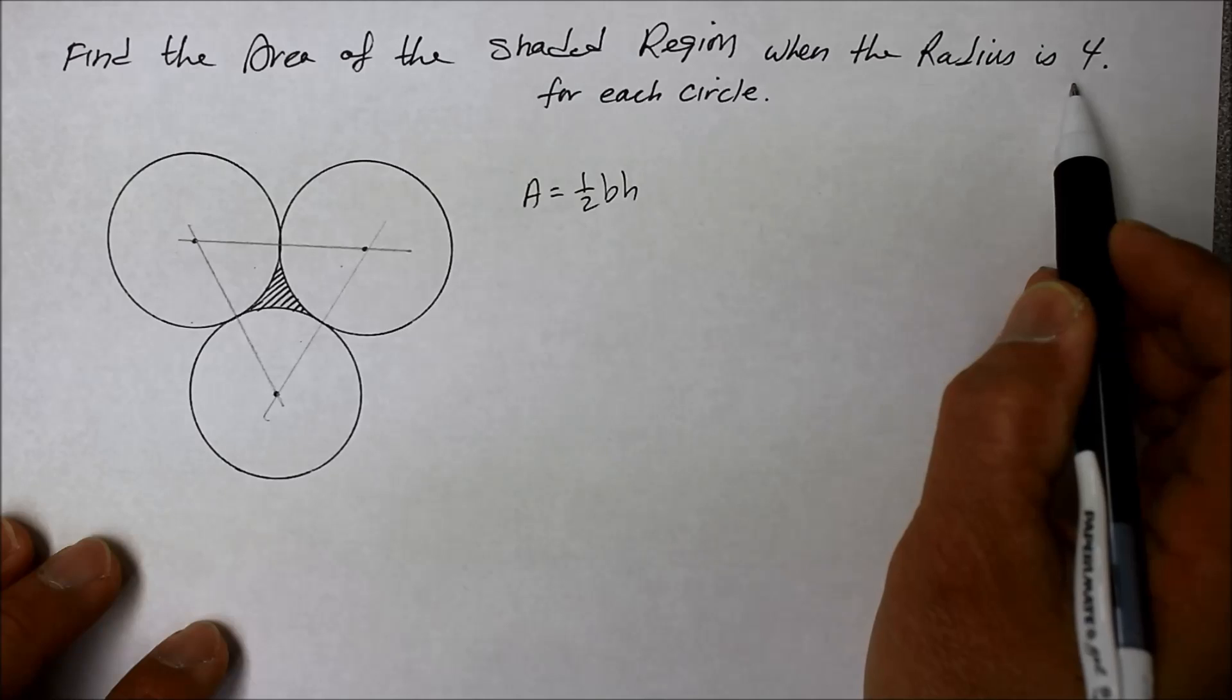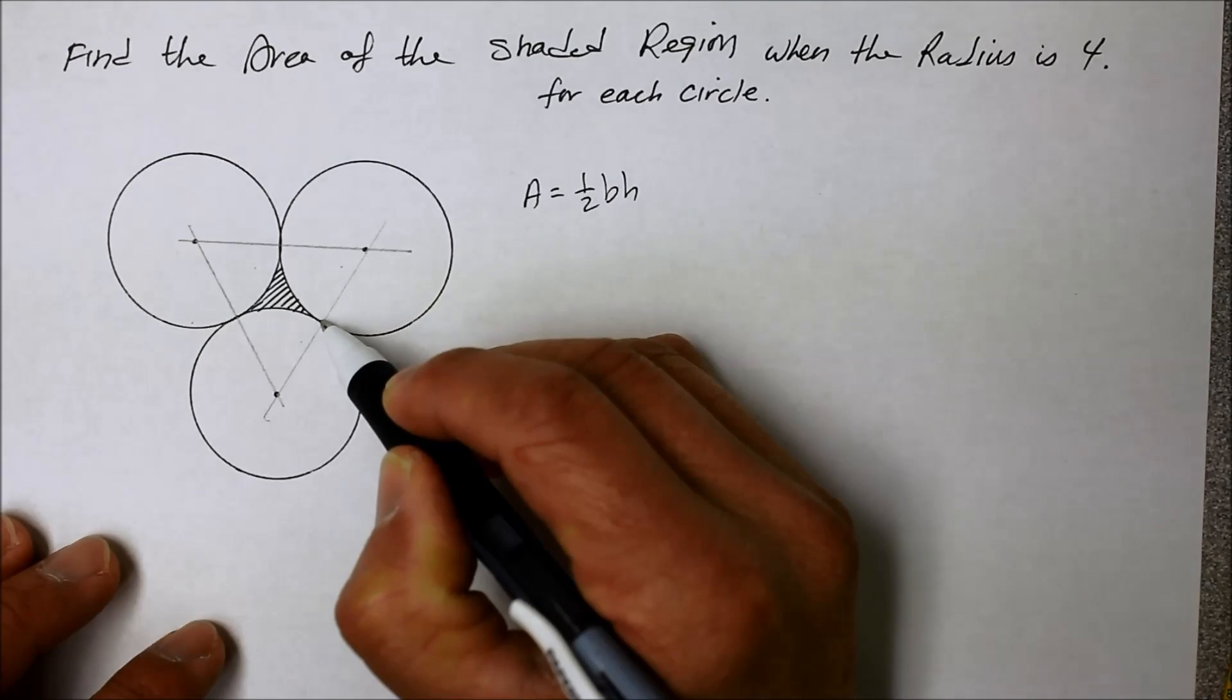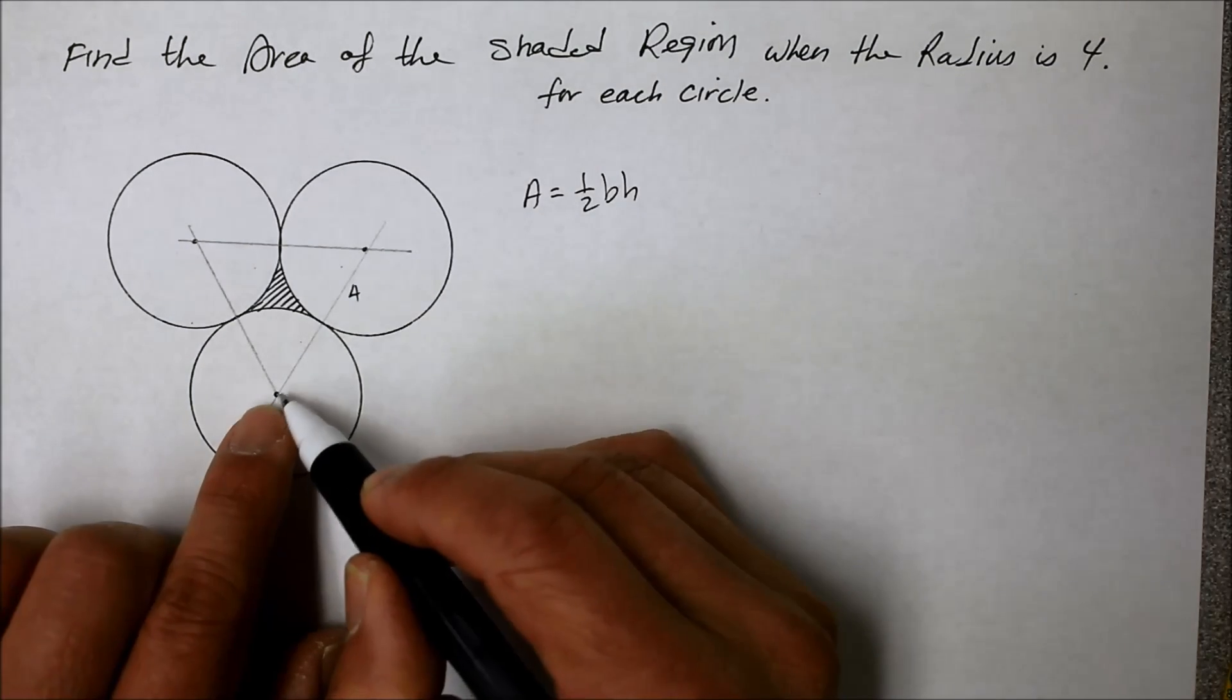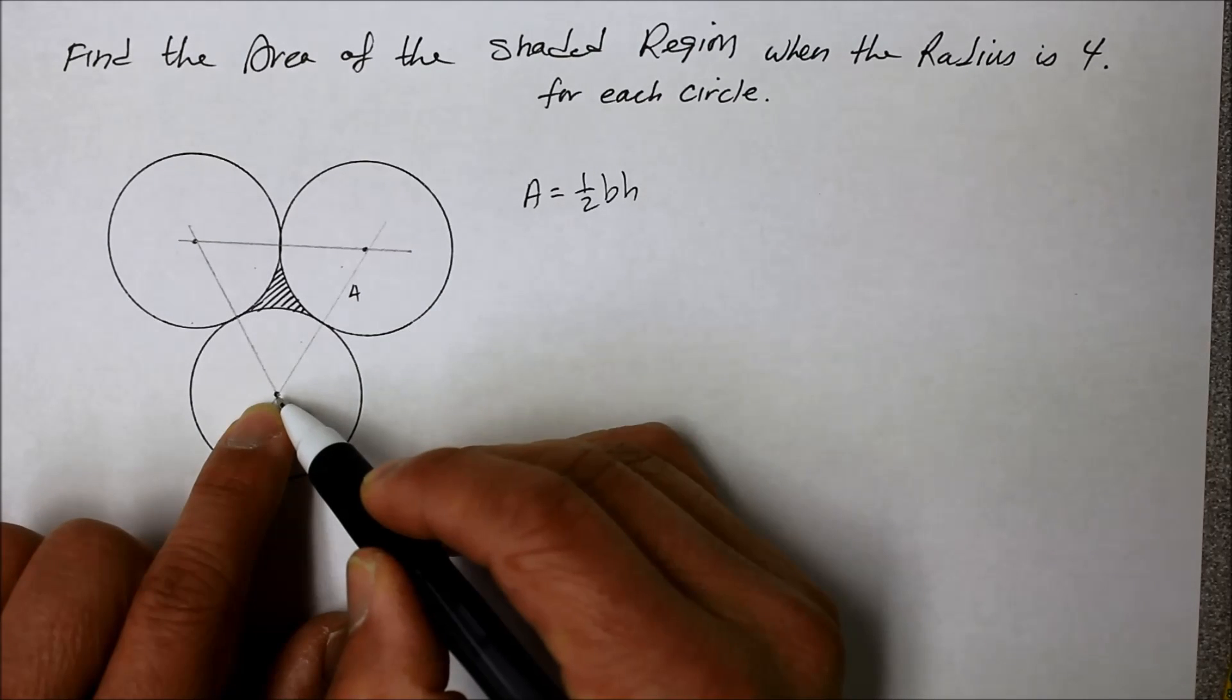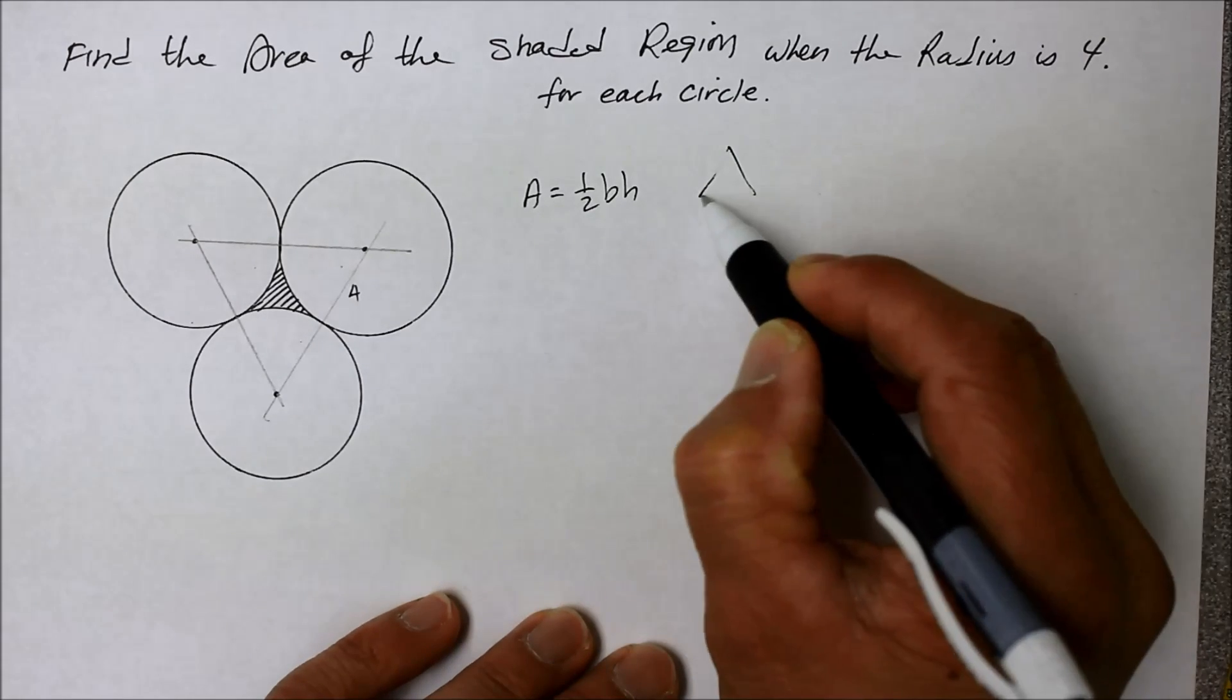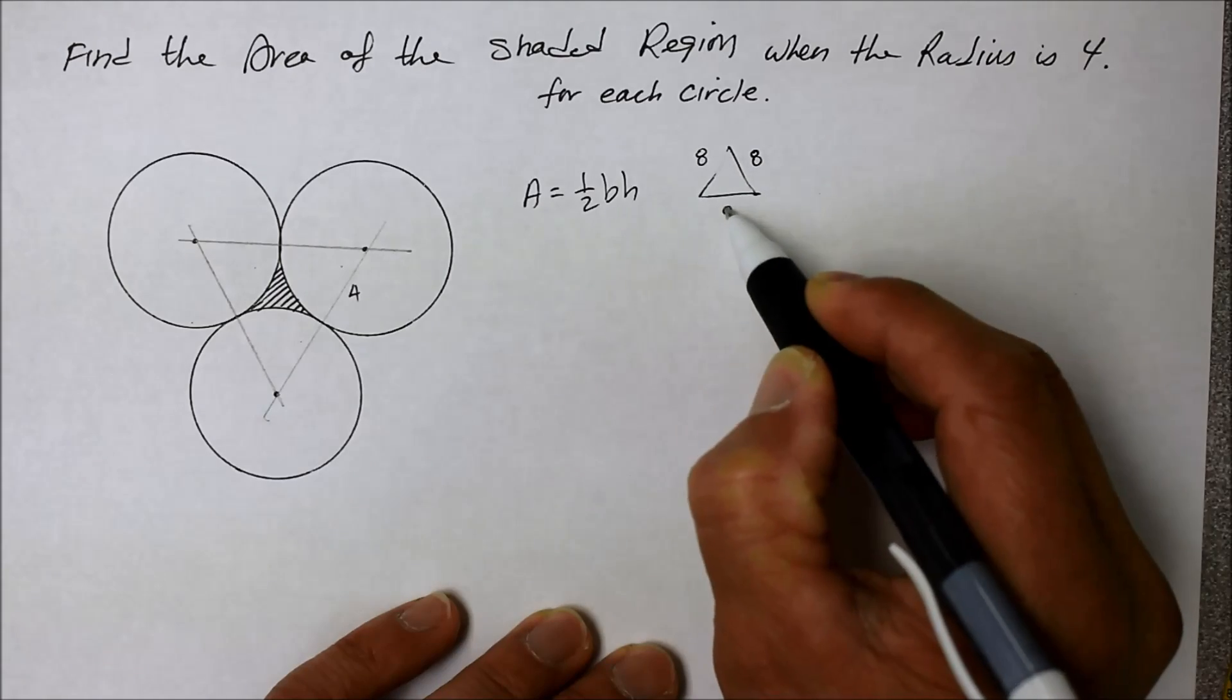Well, it's given that the radius is four. So from here to the circumference edge, that's four units. Well, that means the entire distance from the center to the other center is eight units. So it's an equilateral triangle with the three sides that are eight units for each side.